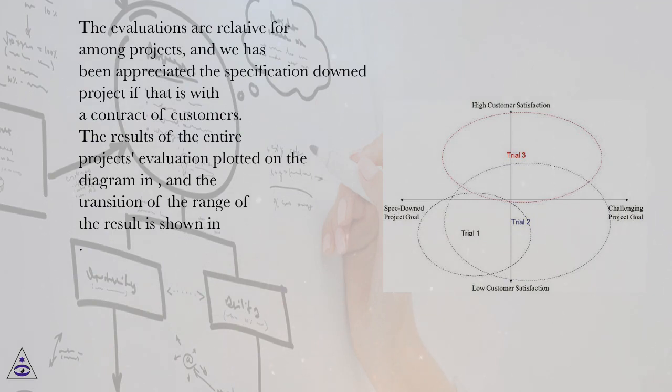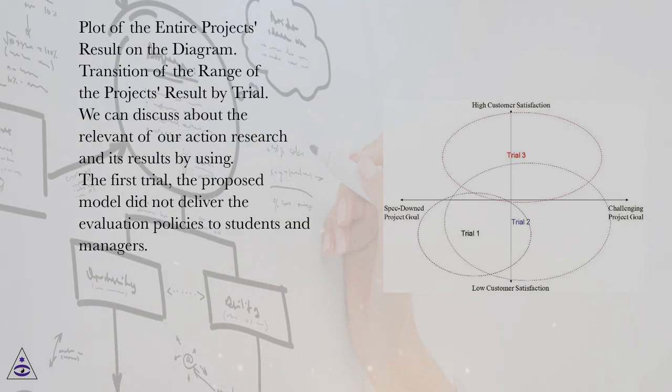The results of the entire project's evaluation plotted on the diagram, and the transition of the range of the result is shown. Plot of the entire project's result on the diagram. Transition of the range of the project's result by trial.